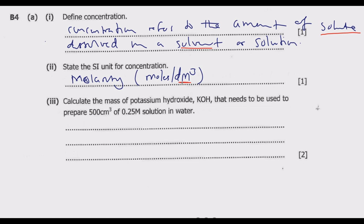Part A, number 3: calculate the mass of potassium hydroxide needed to prepare 500 cm³ of a 0.25 mol/dm³ solution in water. First we need to find the number of moles. The relationship is: molality equals number of moles (n) divided by volume in dm³.